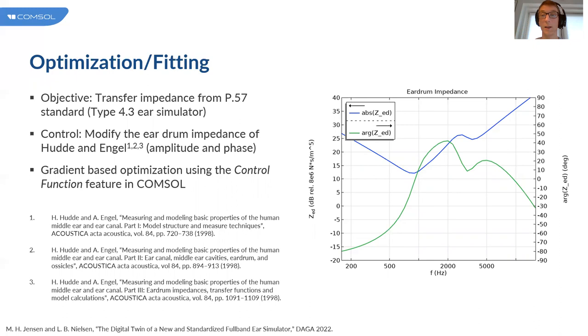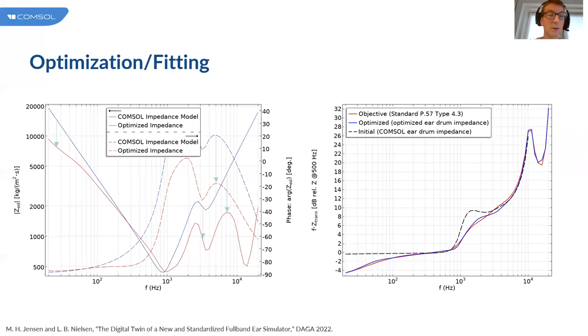Here we see the results of the optimization. The image to the left shows the magnitude and phase of the eardrum impedance, magnitude on the left axis and phase on the right axis. The blue curve was the initial condition, the eardrum impedance of Hudde and Engel, and the red curves are the optimized impedance values. Full curve is the magnitude, dashed line is the phase. The light blue arrows show how the transfer impedance quantities were modified. This was done completely automatically with the optimization. The image to the right shows the objective functions with the dashed black line showing the initial transfer impedance. The red line is the objective function and the blue line is the response after optimization.